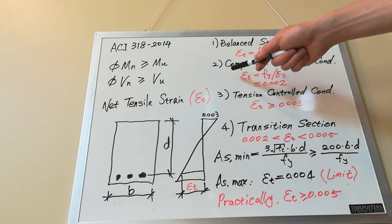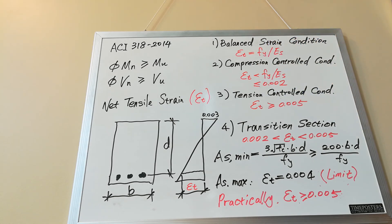The second condition is compression-controlled condition. In this condition, the net tensile strain epsilon t is less than Fy divided by Es. Here Fy is the yielding strength of the steel and Es is the modulus of elasticity of steel.